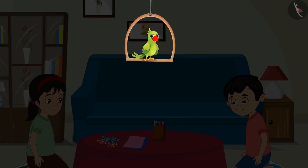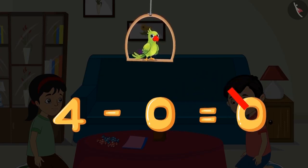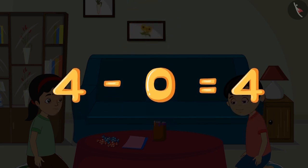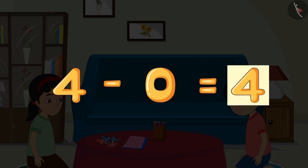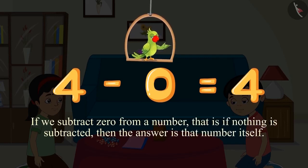So children, out of the four toffees, Pinky did not give even a single toffee to Chotu — this means she gave only zero toffees. We can write this as 4 minus 0. The answer is four, not zero. This means four minus zero equals four. If we subtract zero from a number — that is, if nothing is subtracted — then the answer is that number itself.